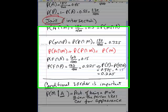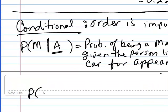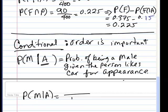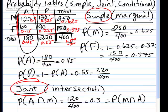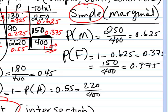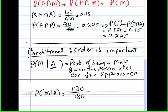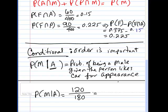Now we know there are 180 of them in there. So probability of M given A — we know there's 180 of them, so we should be dividing by 180. The males out of those 180, there's 120 of them. So it's 120 males out of 180 people who buy a car because of its appearance. And if you go through that math, you get 0.667.